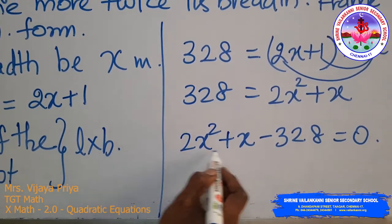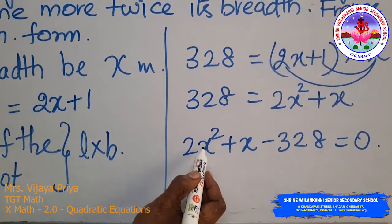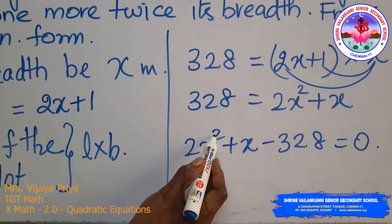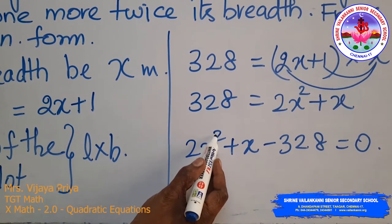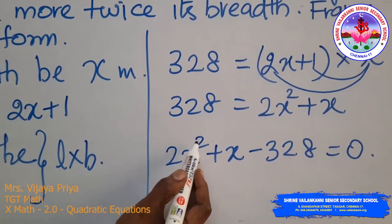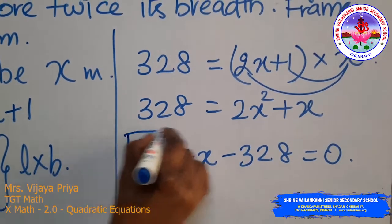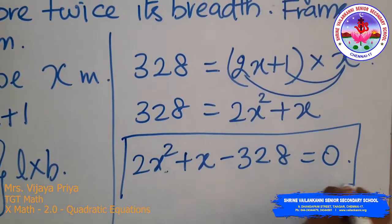Here the equation has variable x with highest power 2, so this represents the situation in the form of a quadratic equation.